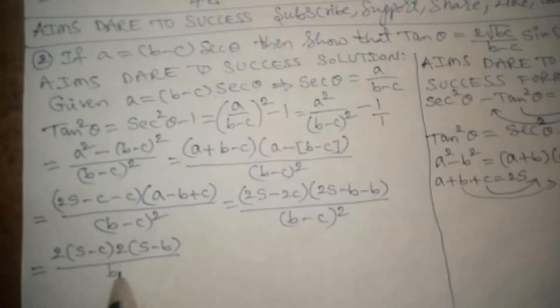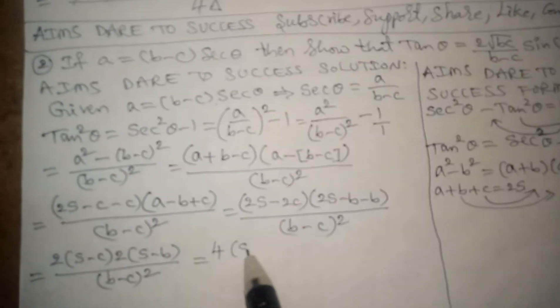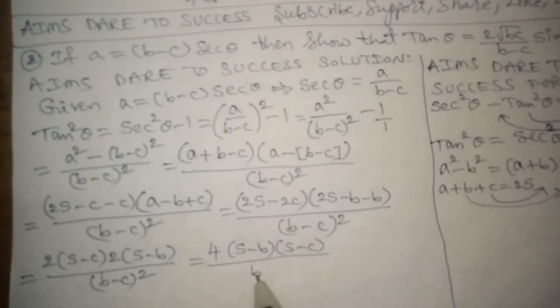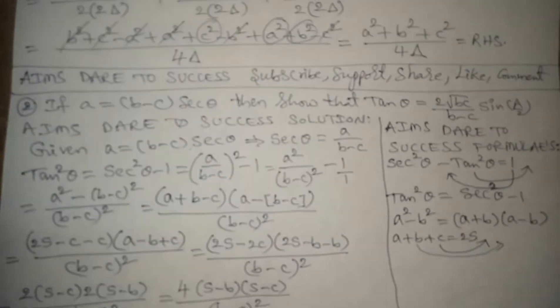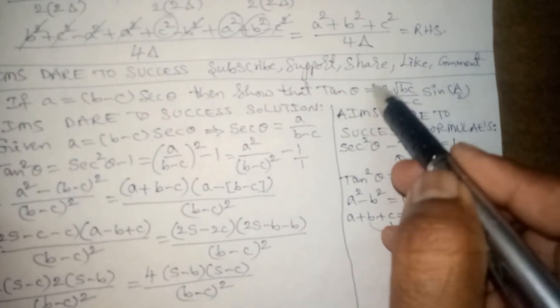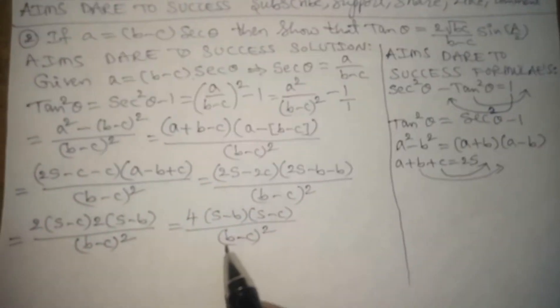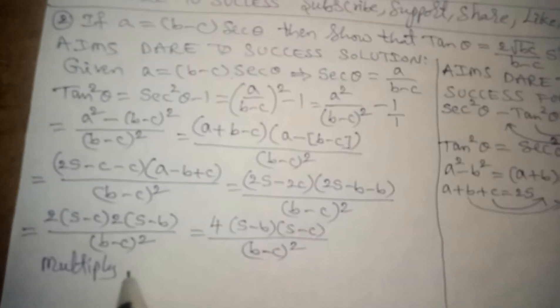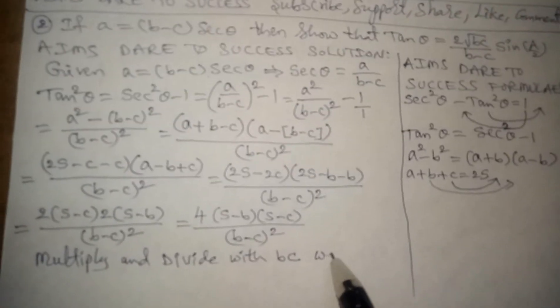This gives us tan squared theta equals 4 times (s minus b) times (s minus c) divided by (b minus c) squared. Looking at the required value to prove, after the 2 we need root(bc), but in this expression we do not have bc, so I want to multiply and divide by bc.